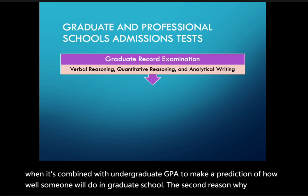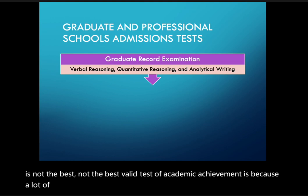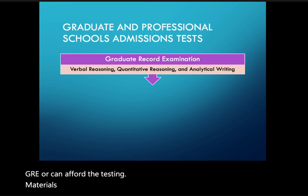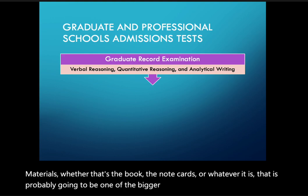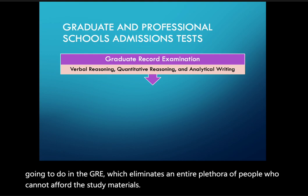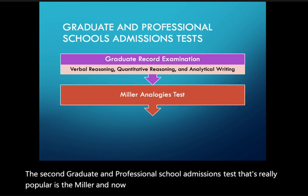A second reason the GRE is not the best measure of academic achievement is that scores are heavily influenced by access to study materials. If you can afford to take a prep course or purchase study books and note cards, that is probably one of the bigger indicators of how well you'll do — which effectively eliminates an entire group of people who cannot afford those materials.